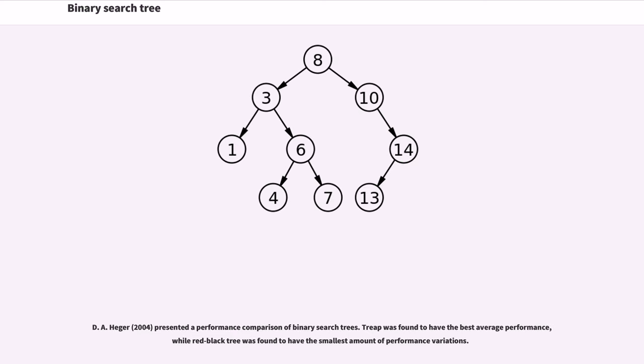D.A. Haga, 2004, presented a performance comparison of binary search trees. Treap was found to have the best average performance, while red-black tree was found to have the smallest amount of performance variations.